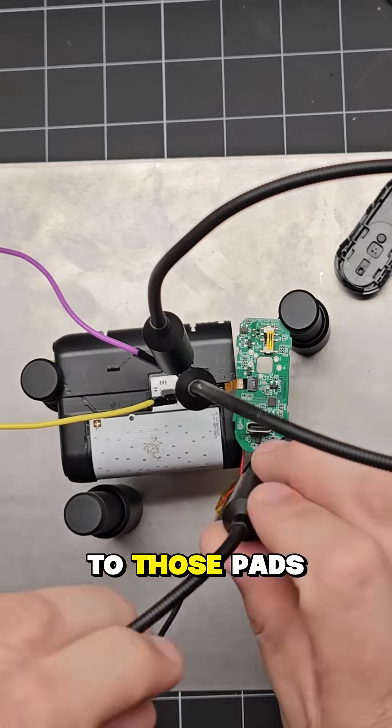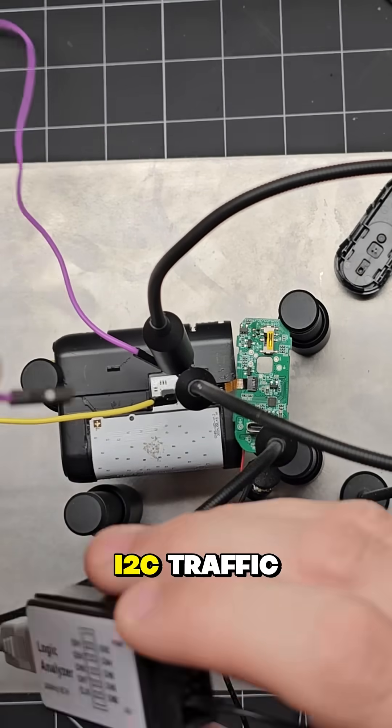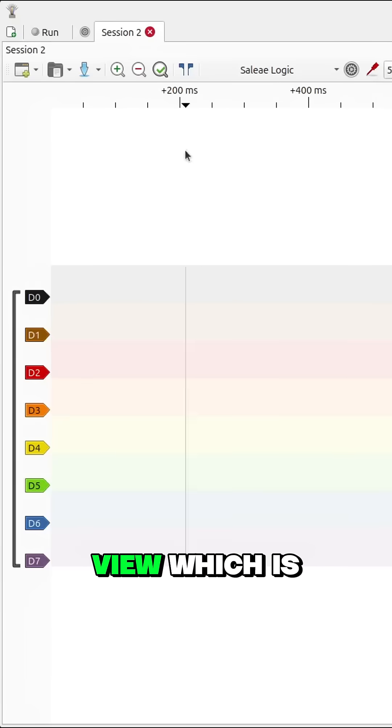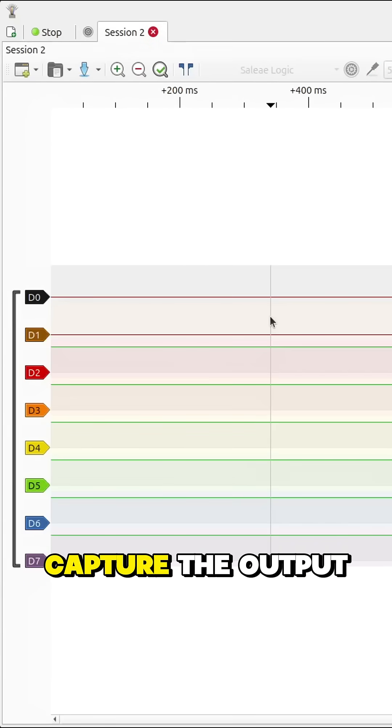Let's hook some test probes up to those pads and a logic analyzer and see if we can't sniff out some of that I2C traffic. I'm using PulseView, which is an open source software to view and capture the output of the logic analyzer.